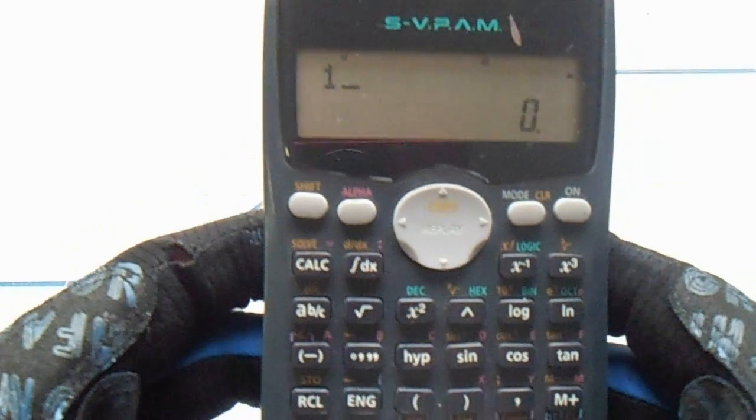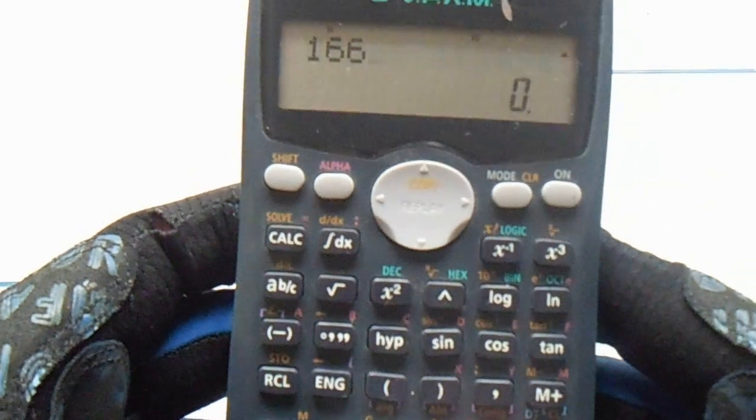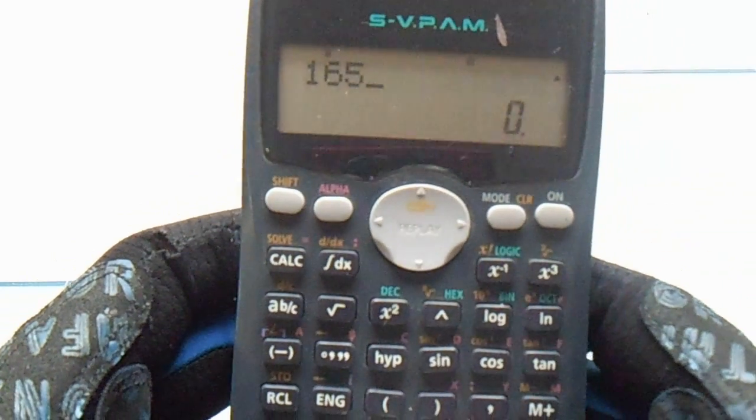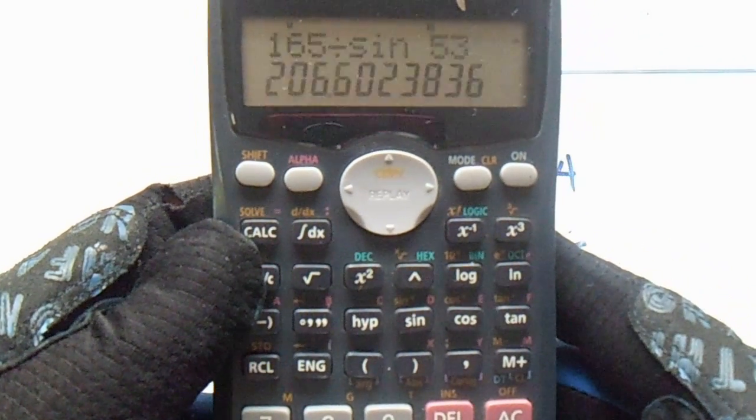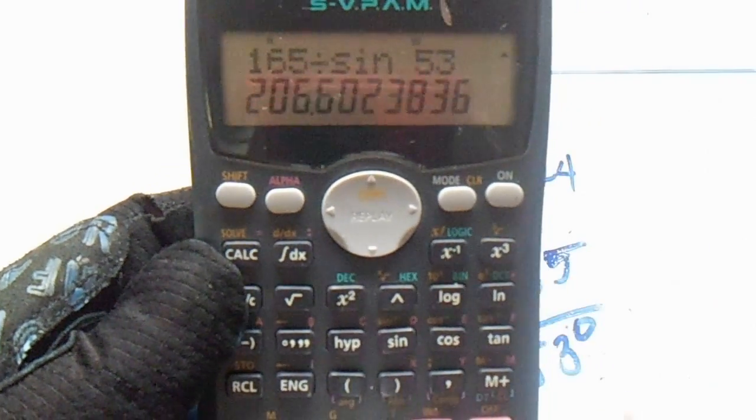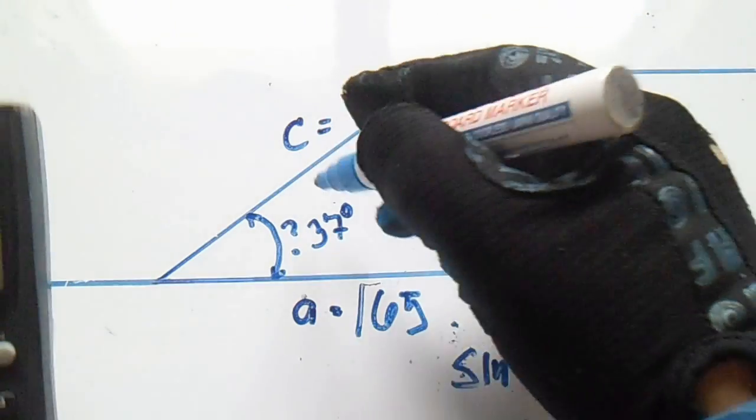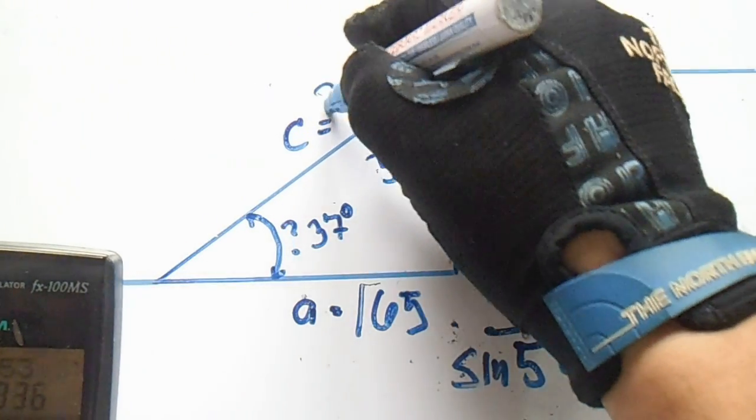So 165, 165 divided by sine 53. Okay, so our answer from this angle side is 206.